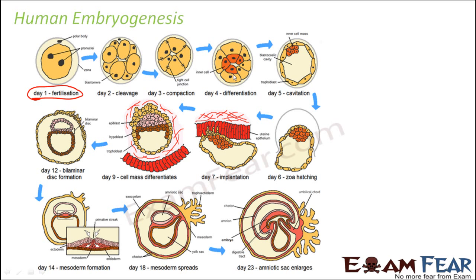Gradually, differentiation happens — you can see the color of the cells has changed. The red colored cells group together, yellow colored cells group together, and they are going to perform separate functions. One has formed an inner layer of cells. You can see the number of cells is increasing — cell division is happening — and at the same time cells are differentiating. There are orange, red, and yellow colored cells — three different cell types.